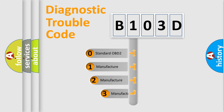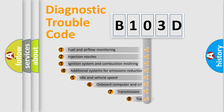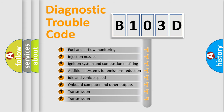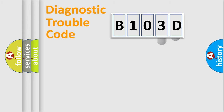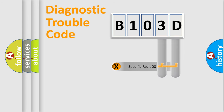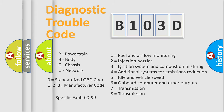If the second character is expressed as zero, it is a standardized error. In the case of numbers 1, 2, or 3, it is a more manufacturer-specific expression of the error. The third character specifies a subset of errors. This division is valid only for the standardized DTC code, and only the last two characters define the specific fault of the group. Such a division is valid only if the second character code is expressed by the number zero.